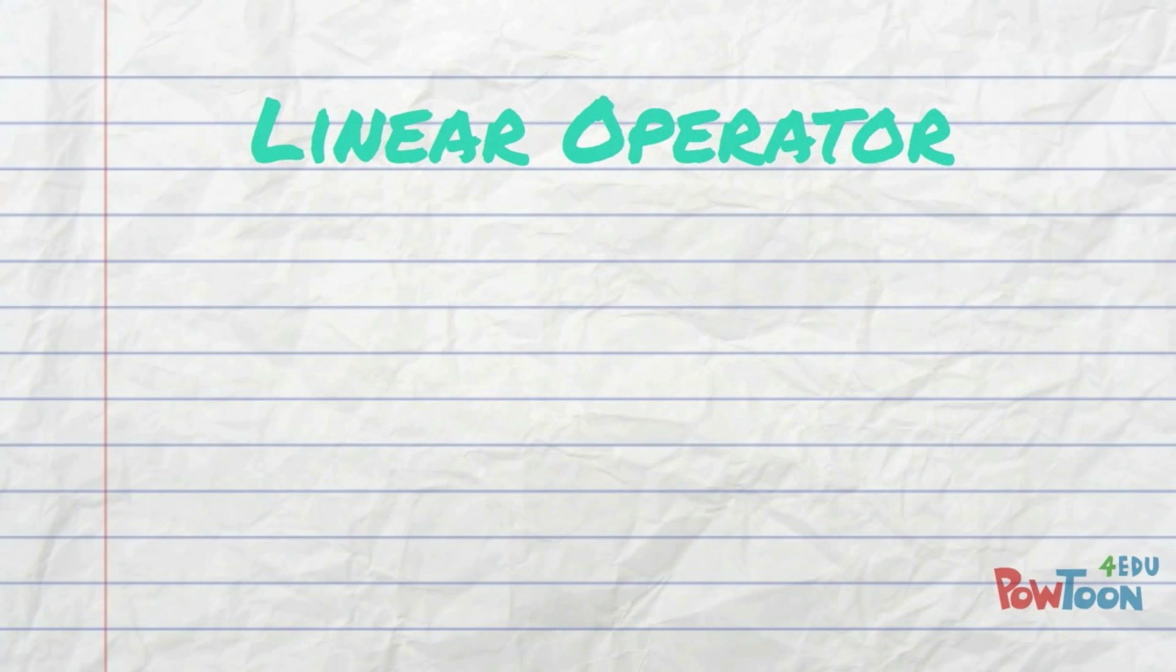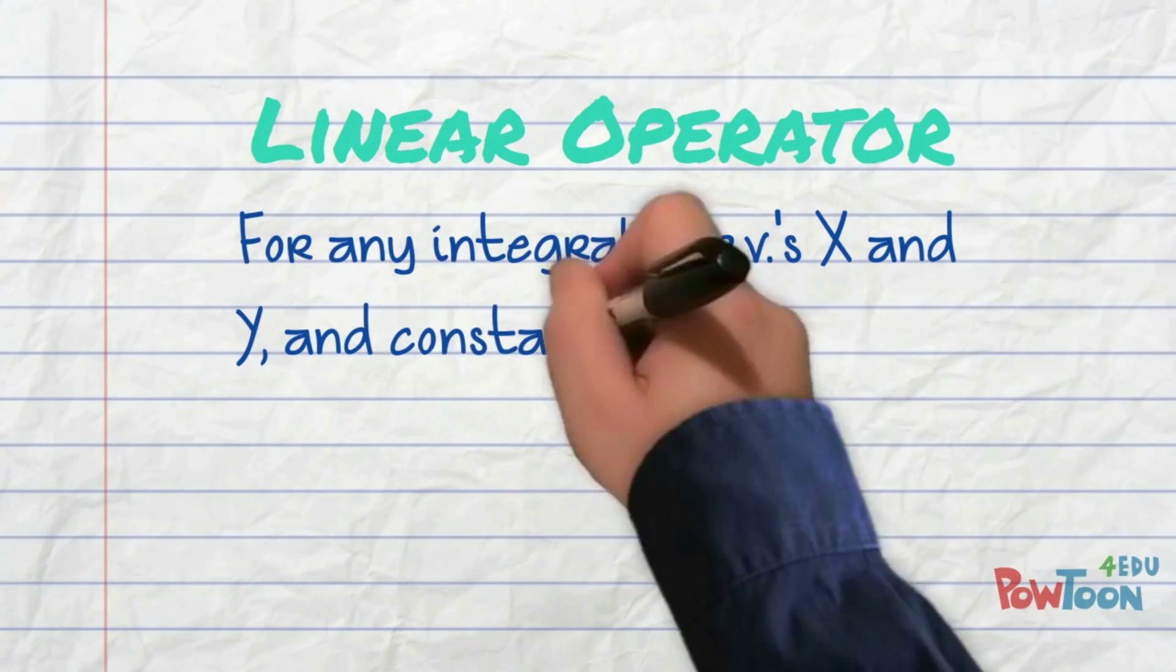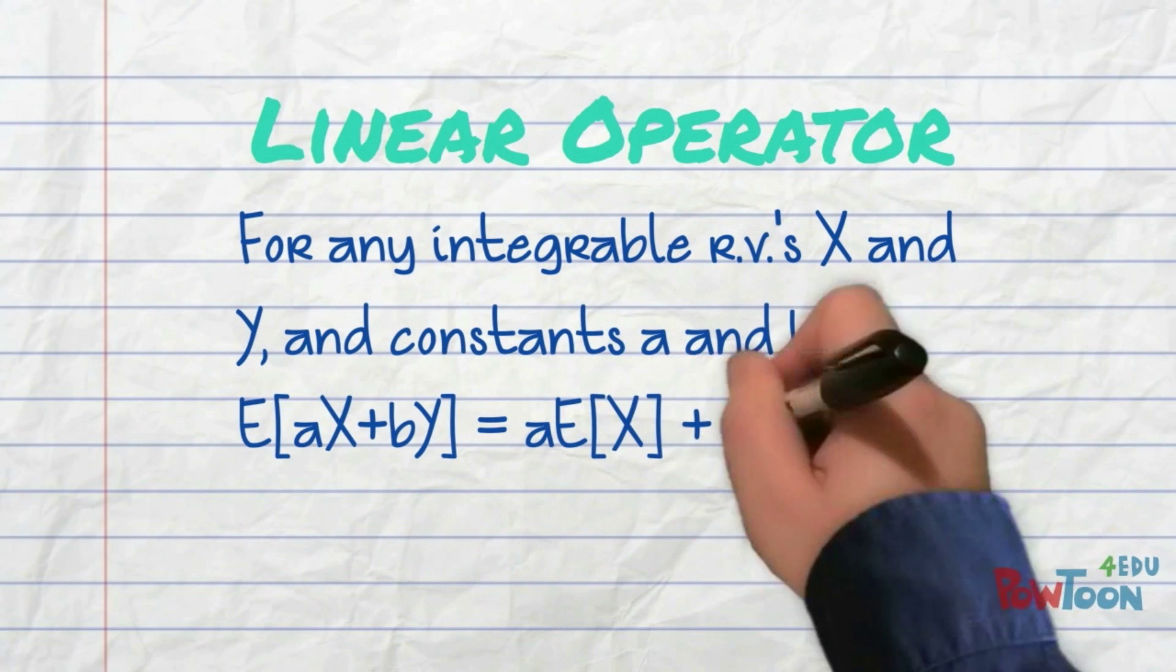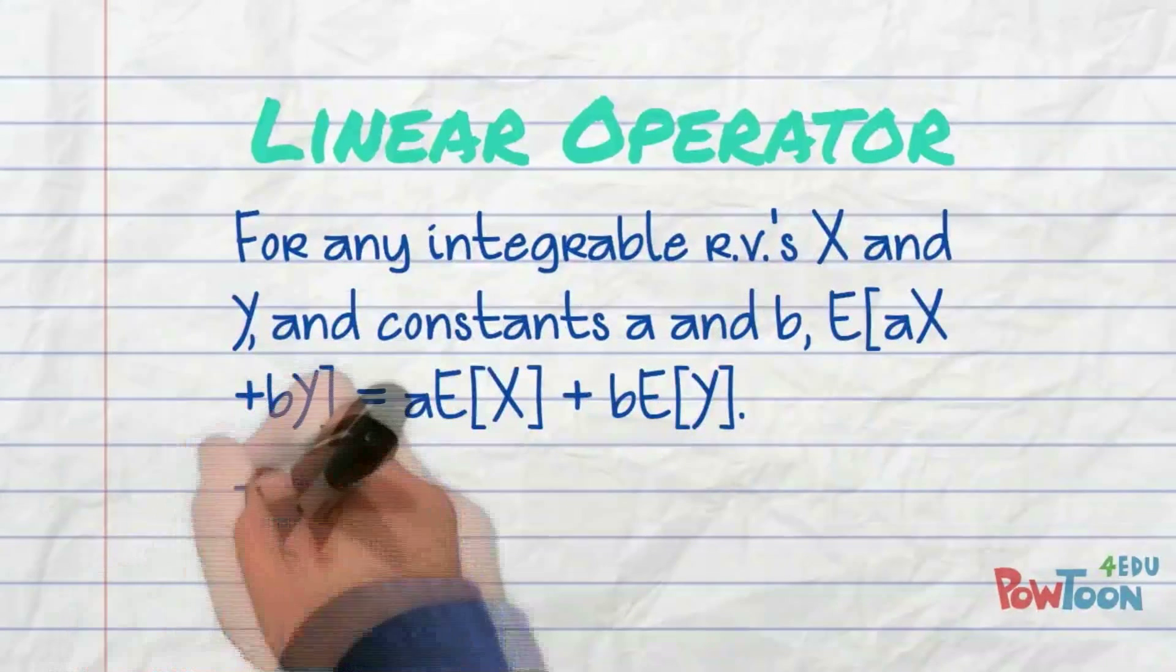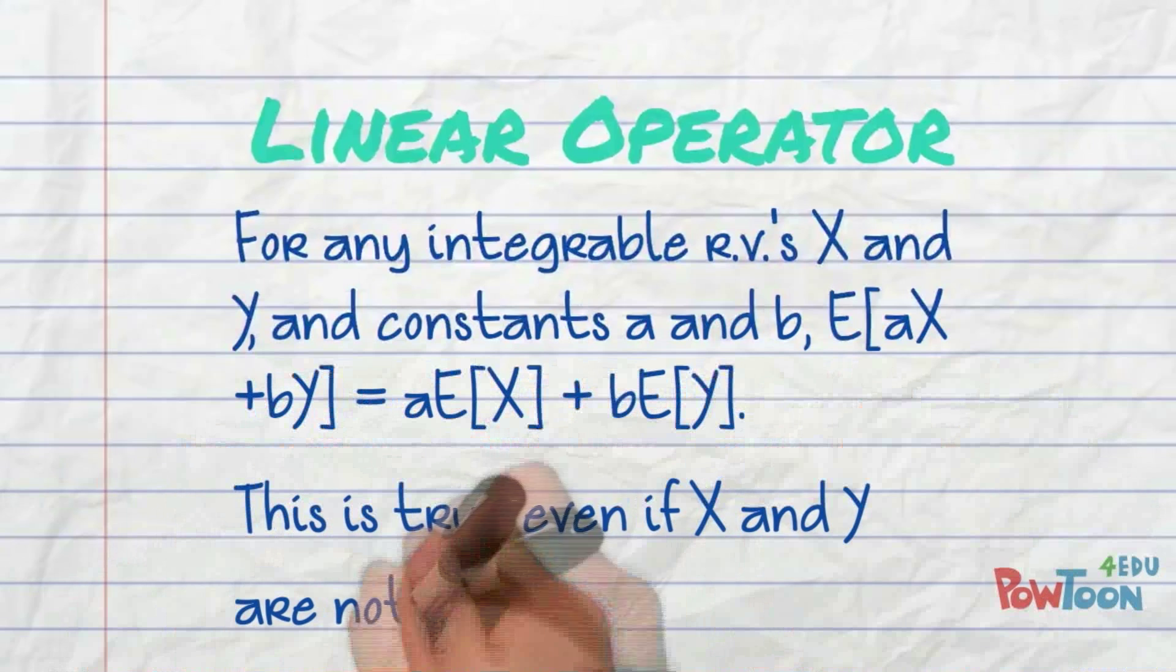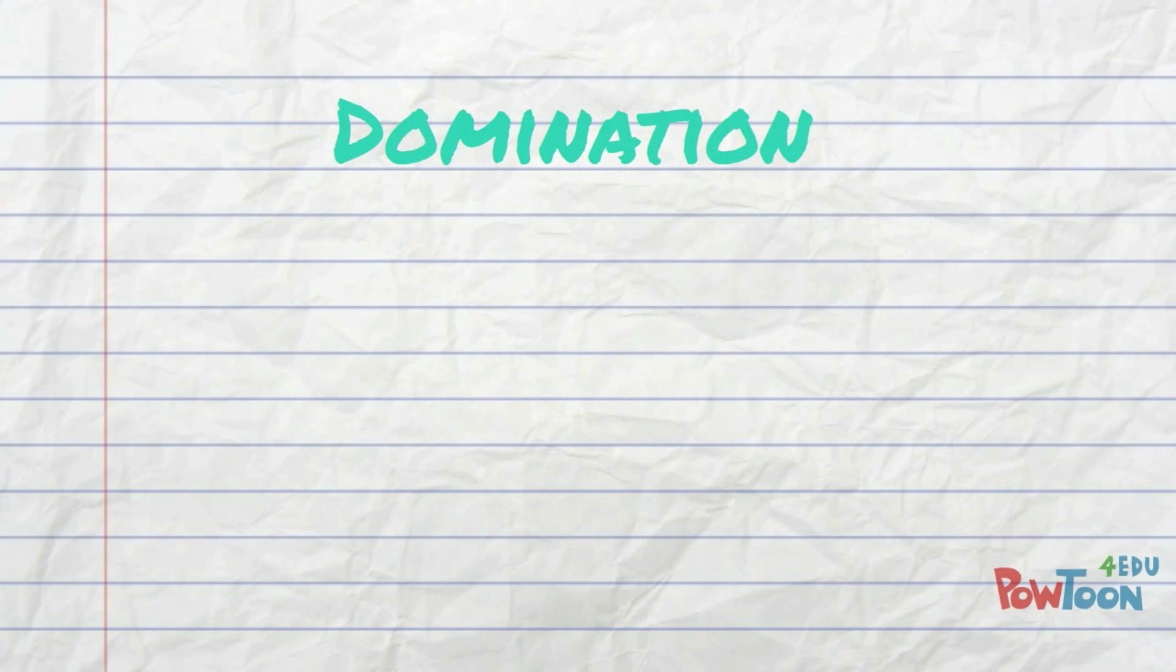An important property of expectation is that it is a linear operator. That means that for any random variables x and y, and any constants a and b, the mean of a times x plus b times y is a times the mean of x plus b times the mean of y. This works even if x and y are dependent, or even if y is f of x for some function f.